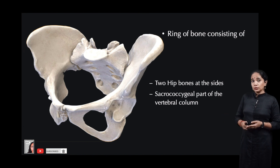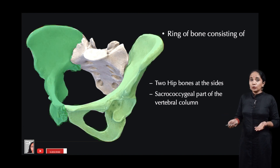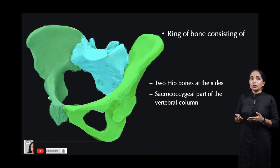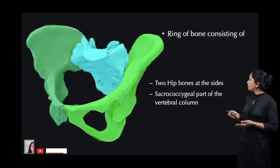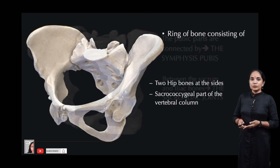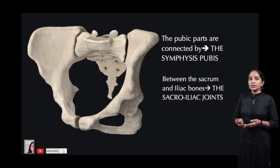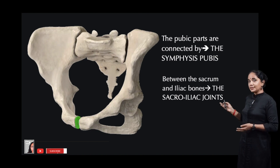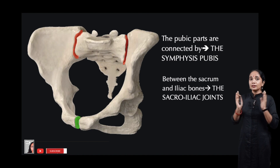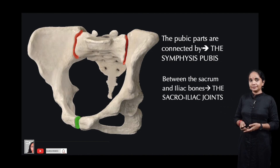The bony pelvis is basically a ring of bone consisting of two hip bones, or os coxae, on either side, as well as the sacro-coccygeal part of the vertebra posteriorly. If you look at it from the front, the pubic parts are connected by the pubic symphysis, which is the joint right in the middle, and then you have the sacroiliac joints on either side. So there are three joints in the complete pelvic girdle.